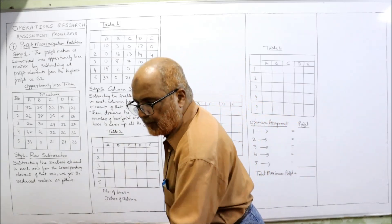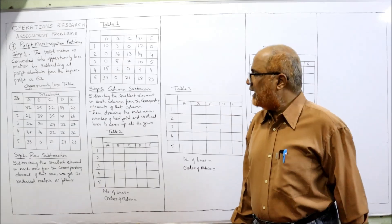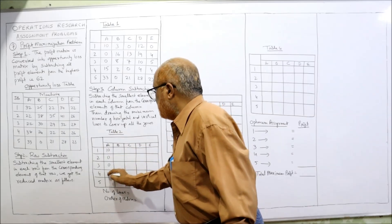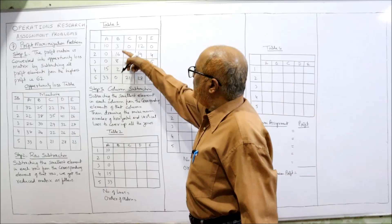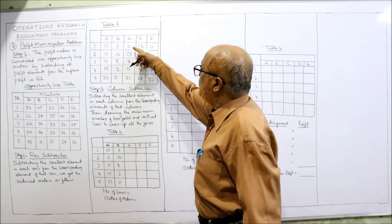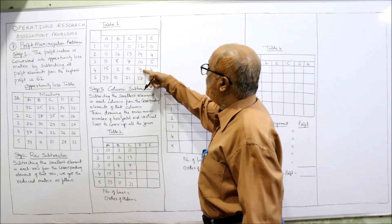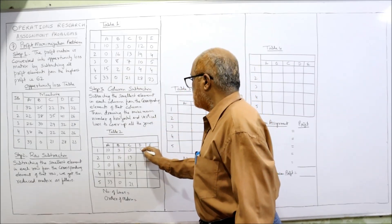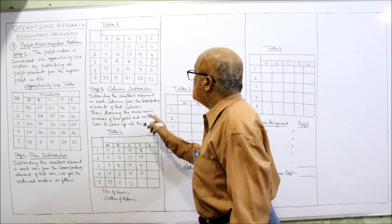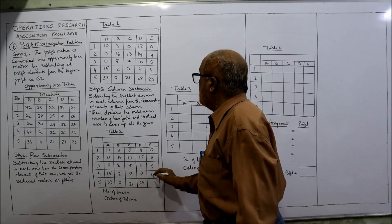Now the second step: column subtraction. In each column, subtract the minimum element from all elements. First column minimum is 0, so same values: 10, 0, 0, 15, 33. Second column minimum is 0, same values: 3, 16, 8, 2, 0. Third column minimum is 0, same values: 0, 13, 7, 0, 21. Fourth column minimum is 4: 12 minus 4 is 8, 19 minus 4 is 15, 10 minus 4 is 6, 4 minus 4 is 0, 28 minus 4 is 24. Last column minimum is 0, same values: 0, 4, 5, 4, 23.